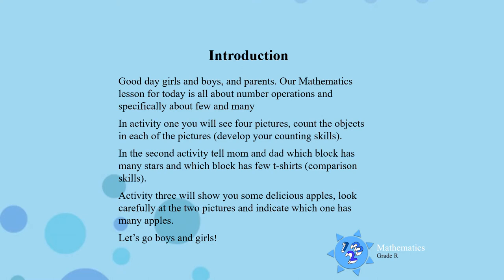In activity one, you will see four pictures. You must count the objects in each of the pictures. In the second activity, tell mom and dad which block has many stars and which block has few t-shirts. Activity three will show you some delicious apples. Look carefully at two pictures and indicate which one has many apples and which one has few apples.